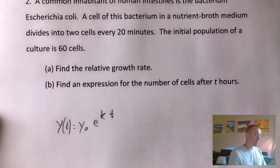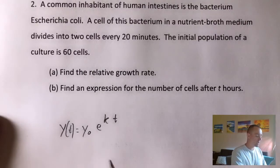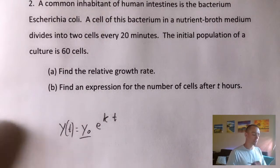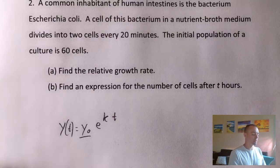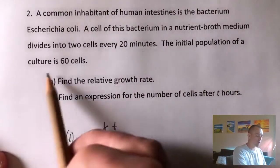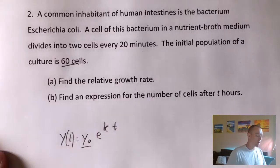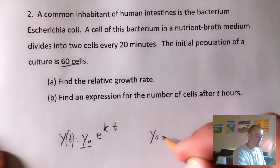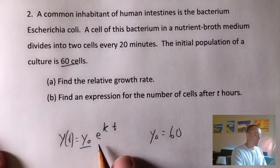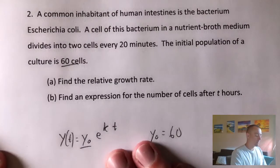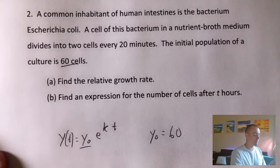So basically in this expression, or actually I guess we should probably say y of t, so that it explicitly shows that this is a function of time. In this formula, we have y sub zero, which is whatever our initial starting number is. So in this case, we know that the initial population of our culture is 60 cells. So y sub zero is going to be 60. And that's just given. E is always going to be E. That's a known constant, it's like 2.7.